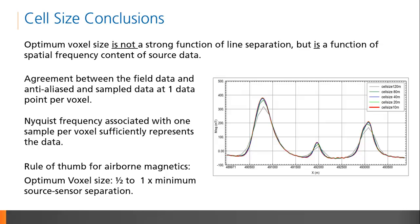In summation, we find that the optimum cell size is not a function of line spacing, but rather the source sensor separation. The best cell size, then, is the largest one that allows you to adequately represent the field data with an anti-aliased signal desampled to one data point per cell. For airborne magnetics, this translates to a rule of thumb of approximately one-half to one times the minimum source sensor separation.